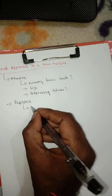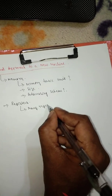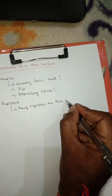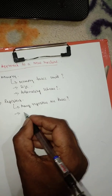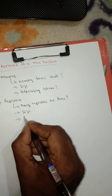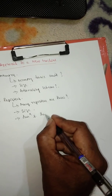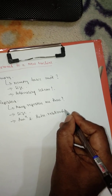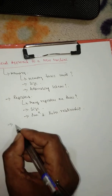The next category is registers. The questions we need to ask ourselves here are: how many registers should there be, what should be their size, what is their function, and what is their interrelationship.